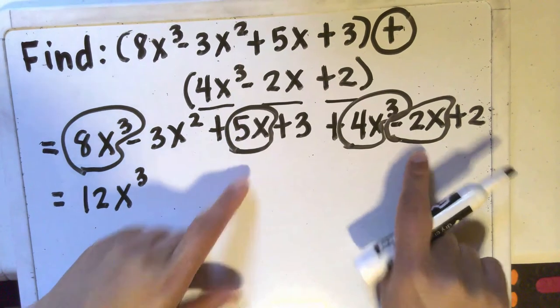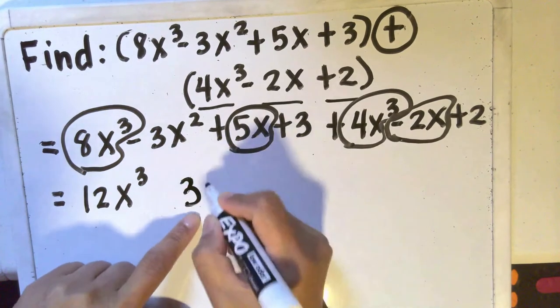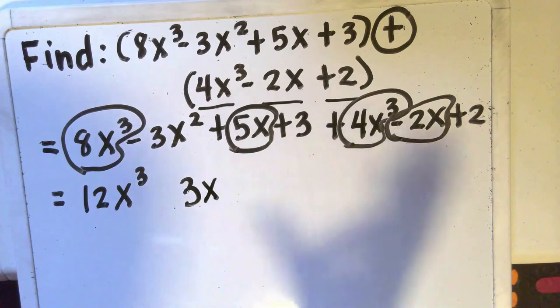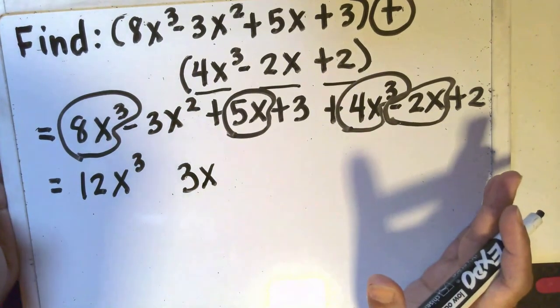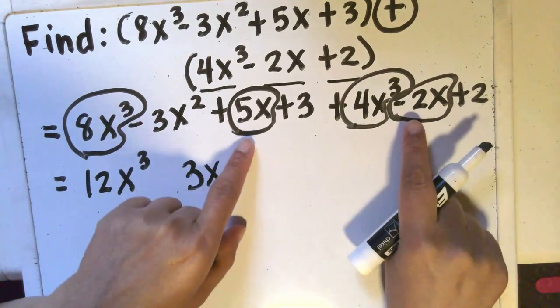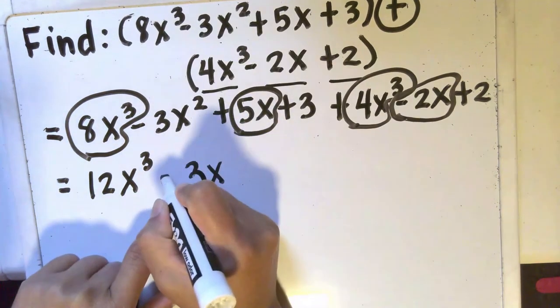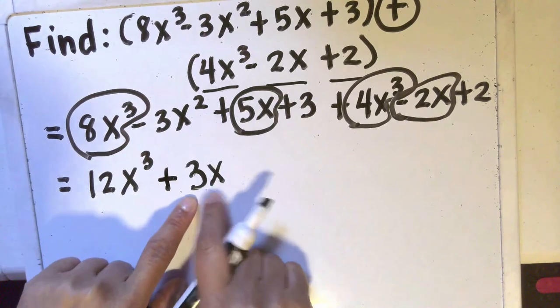The signs are different so I will subtract their absolute values. So I'll have 5 minus 2 is 3. Copy the variable and then I will copy the sign of the number with the higher absolute value. Between 5 and negative 2, 5 has a higher absolute value so therefore I will have positive 3x.